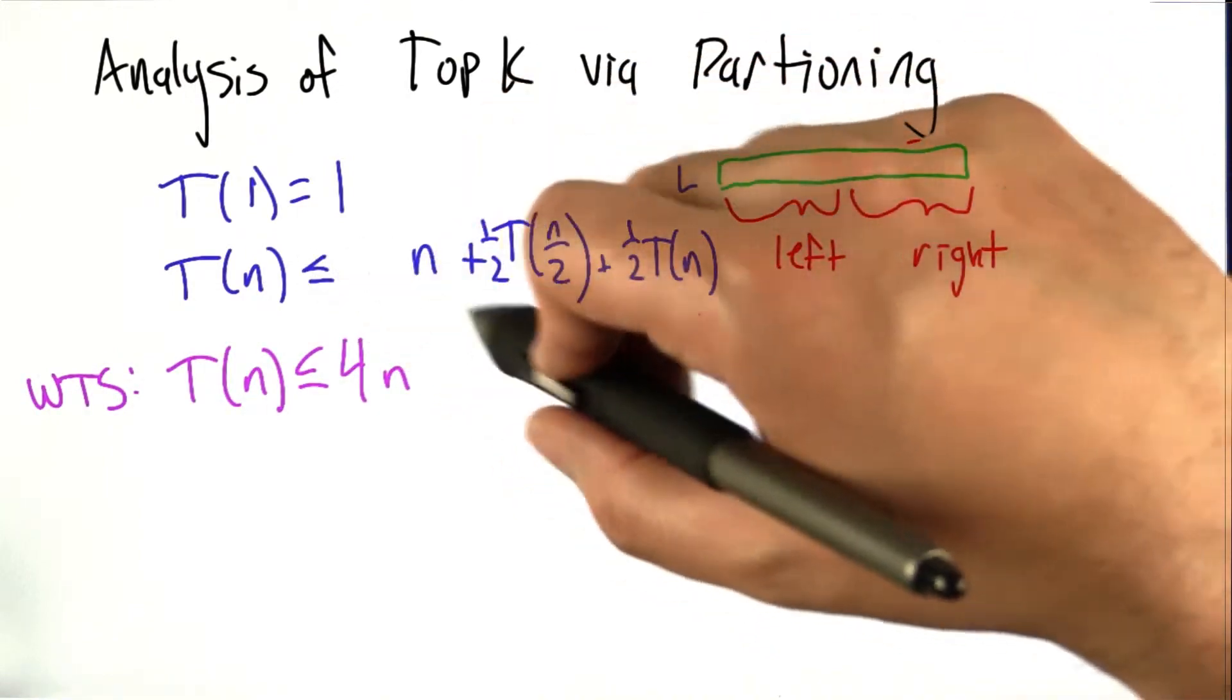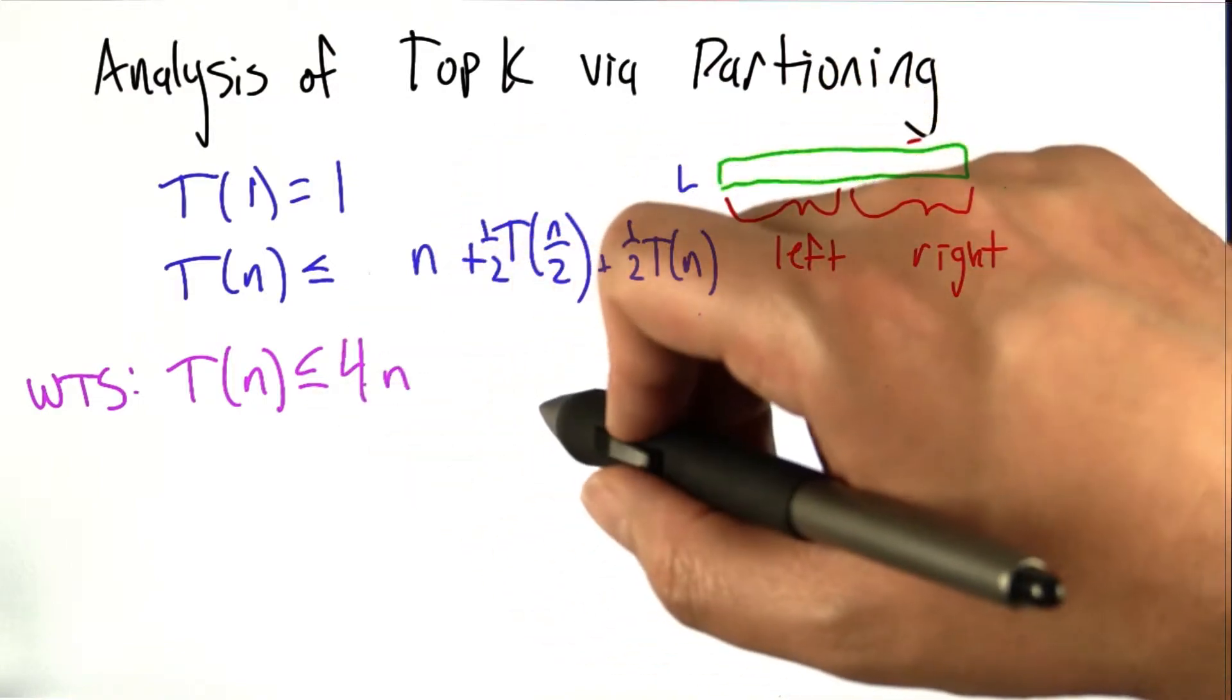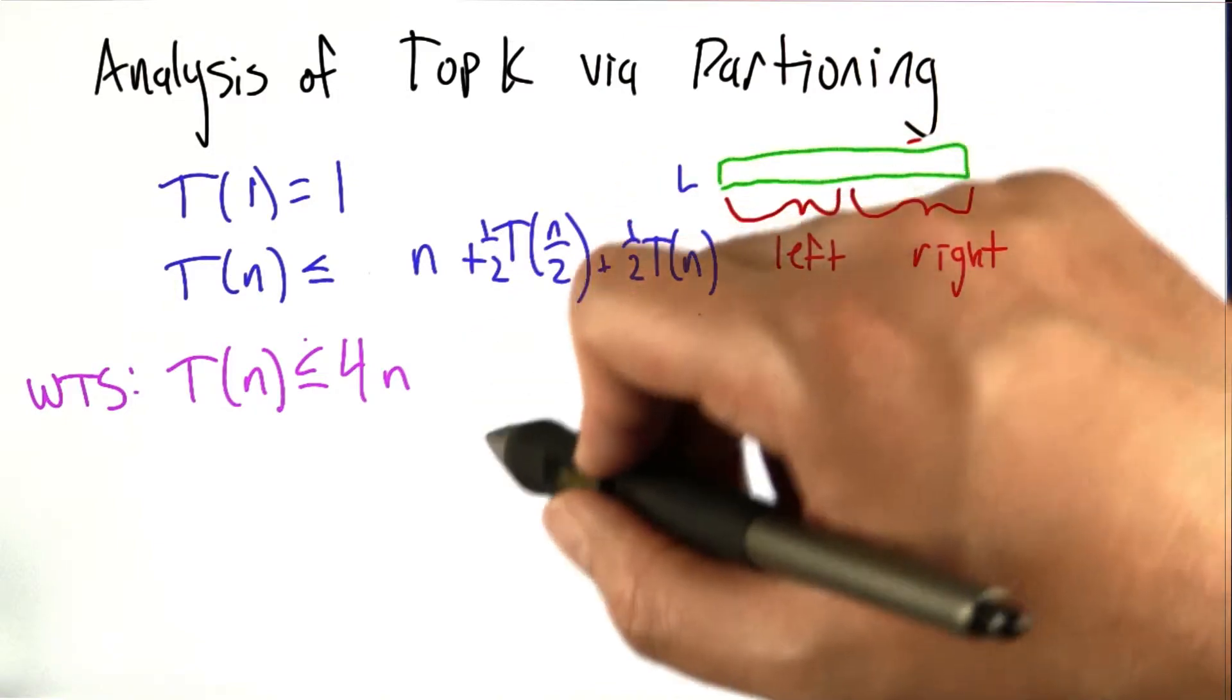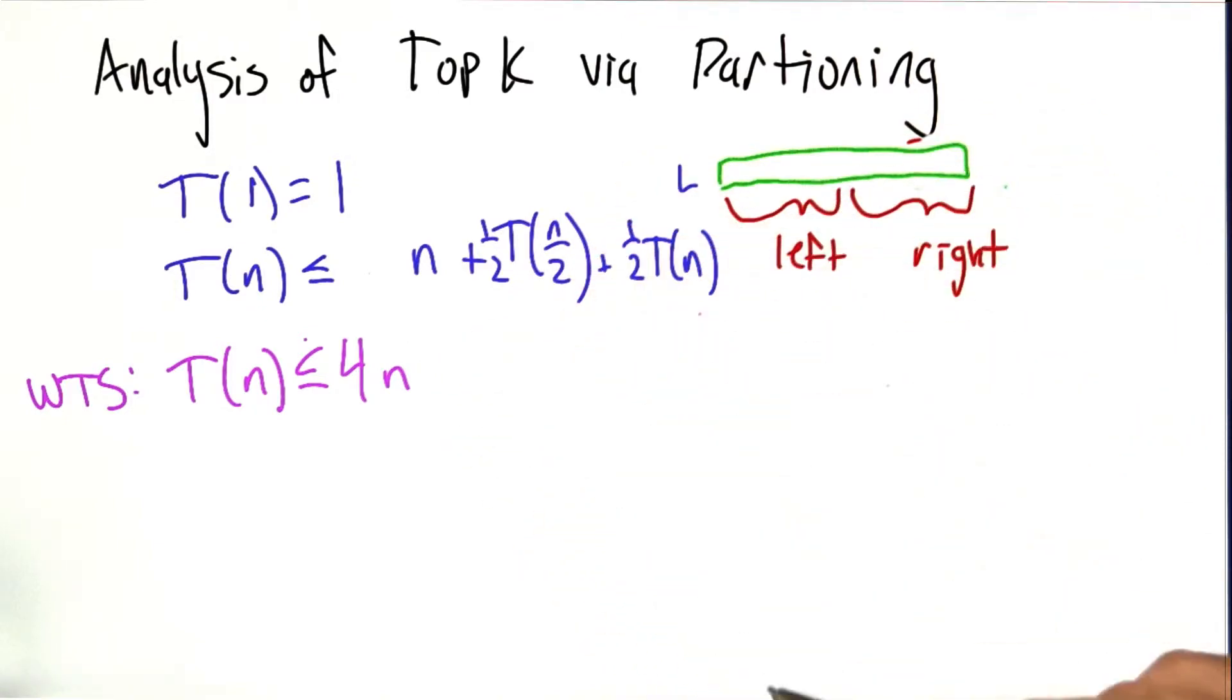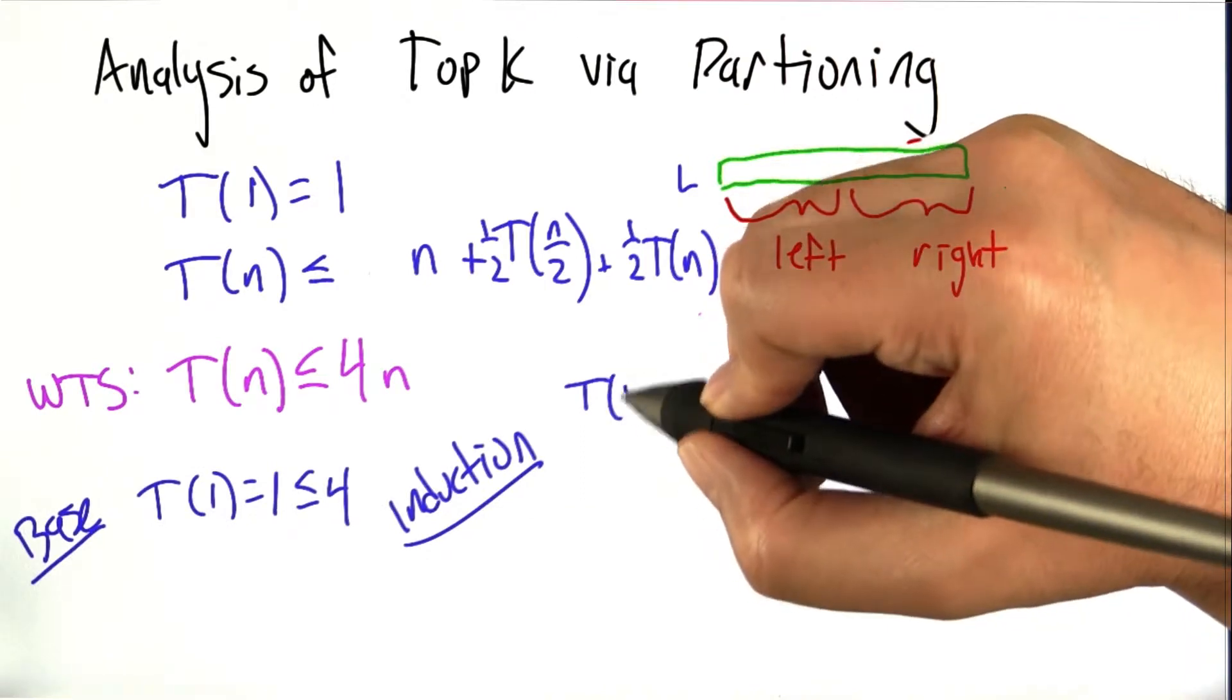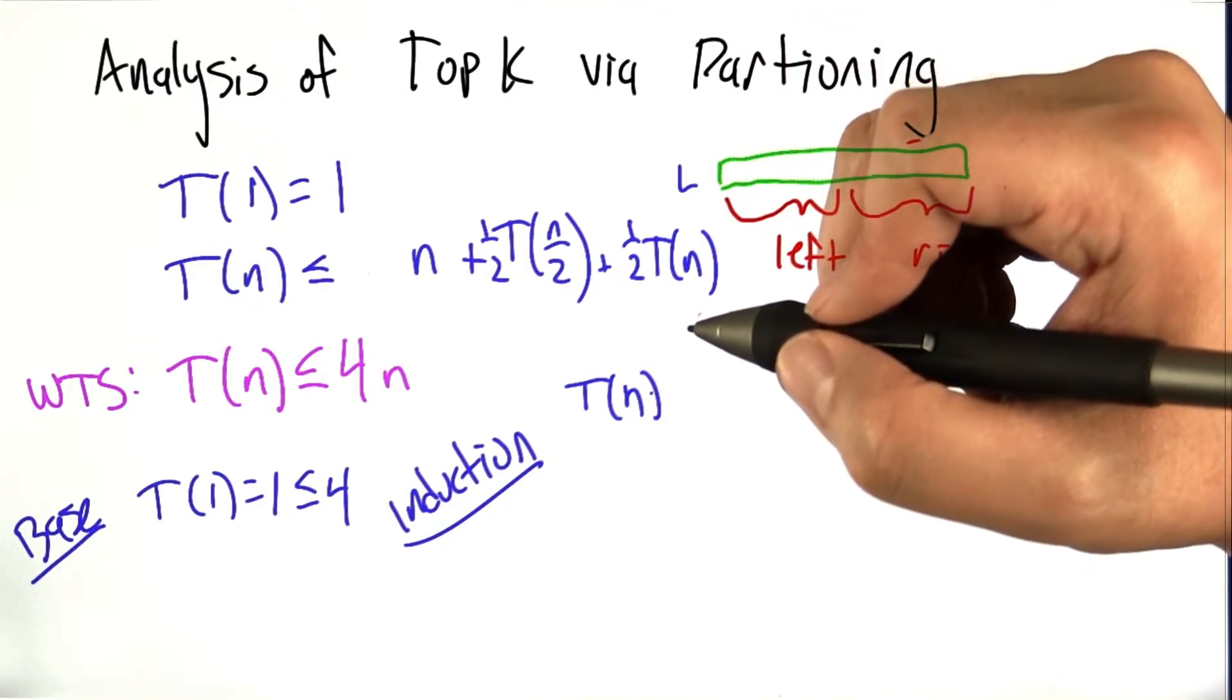So to solve this recurrence relation, I'm going to cheat a little bit because I know that 4n is going to be a good upper bound on the value of T. So all we have to do is actually prove that that's true. We don't actually have to figure it out. So to prove that this is true, we're going to proceed by induction. So our base case is T of 1 equals 1, which is indeed less than or equal to 4.